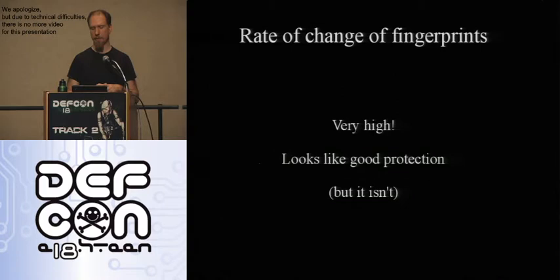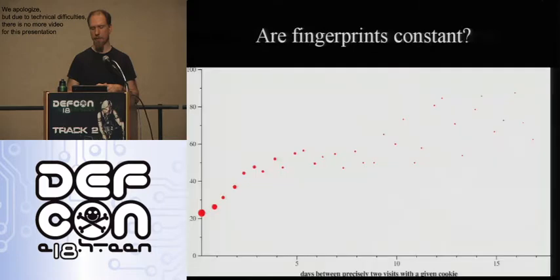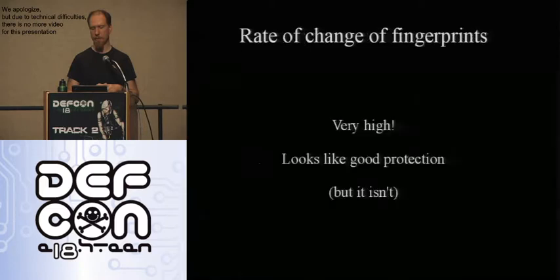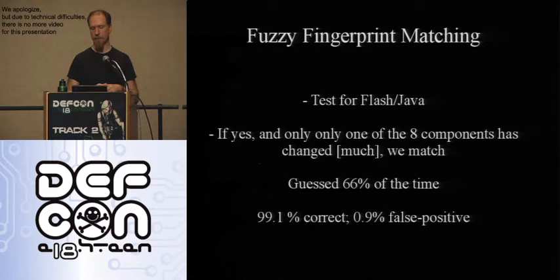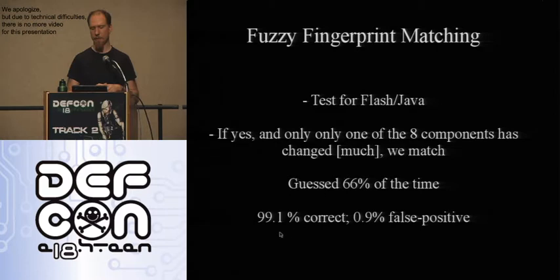Unfortunately, this turned out not to be true. We said, okay, your fingerprint has changed — can we do some kind of fuzzy matching algorithm to see if your fingerprint after the change was uniquely tieable to your fingerprint beforehand? I implemented a hacky algorithm: if only one of those eight measurements has changed, and it hasn't changed very much, and that maps to a unique fingerprint from beforehand, then we guess it's you. It only tries this if you had something revealing like Flash or Java installed. This algorithm guesses about two-thirds of the time, but when it does guess, it's 99% accurate.